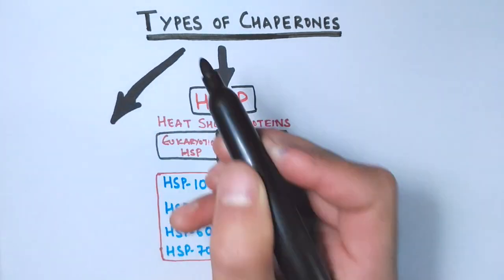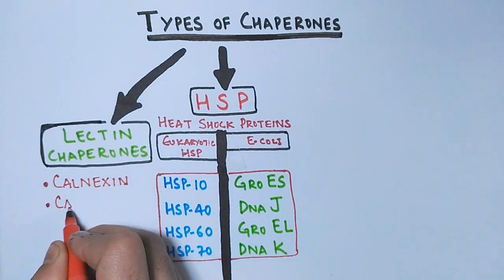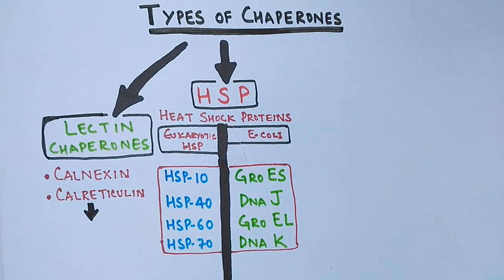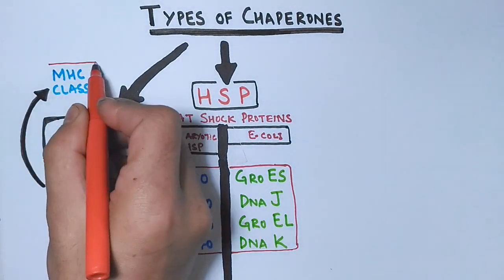Then we have another class of chaperones called lectin chaperones which includes two chaperones, one is calnexin and other one is calreticulin. Both are mediated via calcium IP3 pathway. Both chaperones have function in immune system also like antigen presentation processing in MHC class 1 molecules.